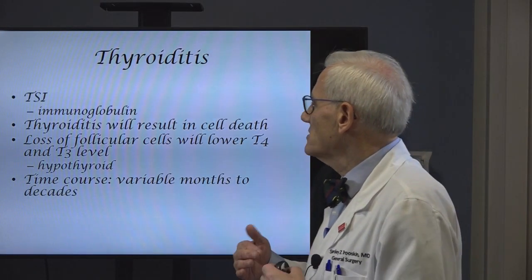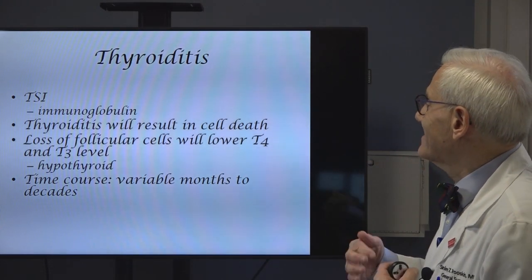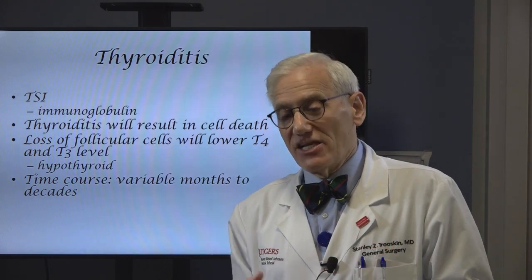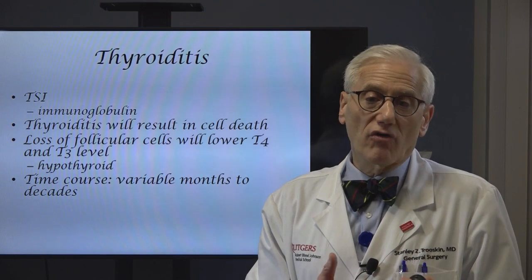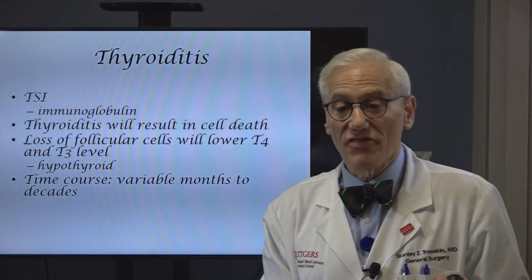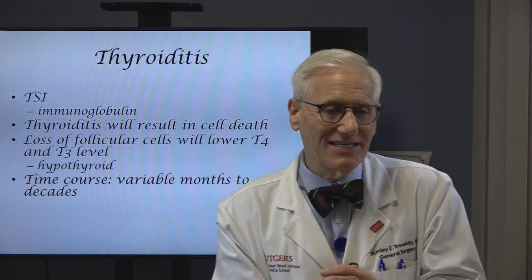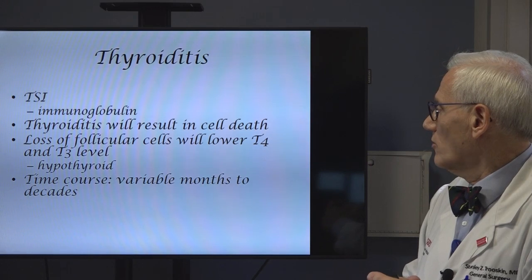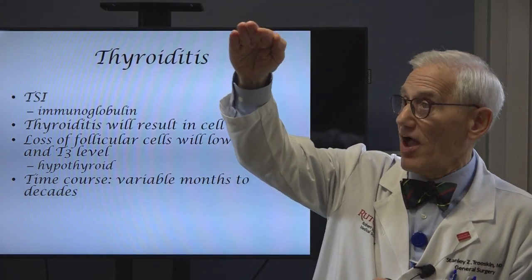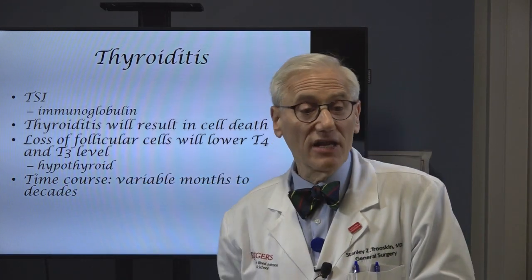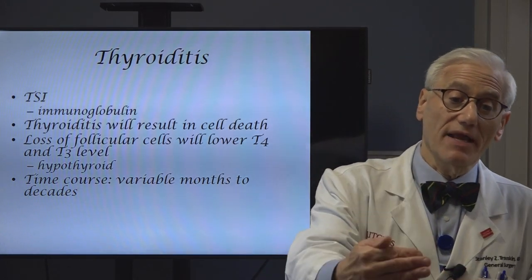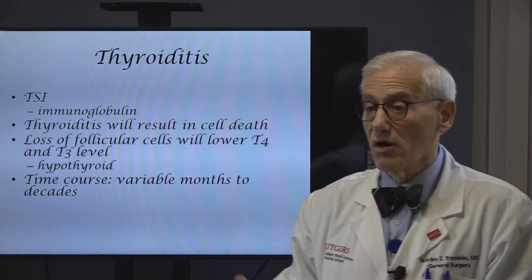In thyroiditis, there is an immune globulin that stimulates the follicular cells to overproduce thyroid hormone. Eventually the follicular cells will program their own cell death. As you lose follicular cells, you're going to lose follicles. They get replaced with scar tissue. The thyroid gland can get very big or can get small and contracted. But eventually it's going to make less thyroid hormone. Over time, people can be hyperthyroid, then have normal thyroid function, and then need to take thyroid medication because they're hypothyroid. So you have one disease, thyroiditis, that's responsible for people being hyperthyroid, having normal thyroid function, or being hypothyroid.